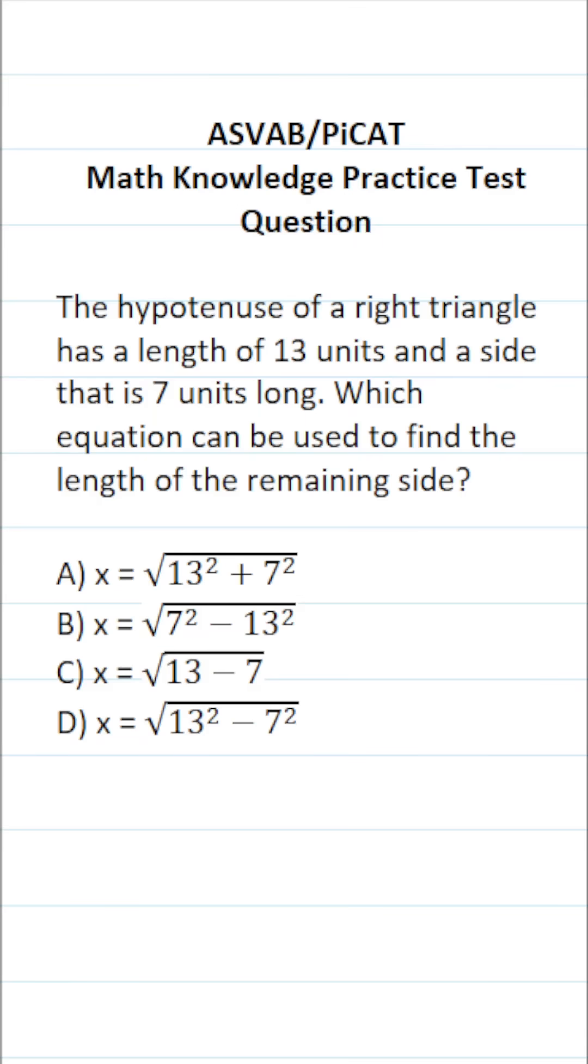This math knowledge practice test question for the ASVAB and PiCAT says the hypotenuse of a right triangle has a length of 13 units and a side that is 7 units long. Which equation could be used to find the length of the remaining side?